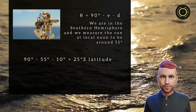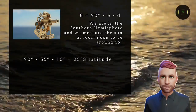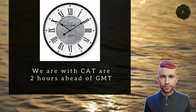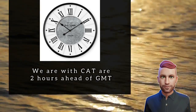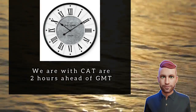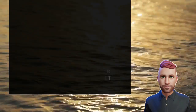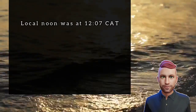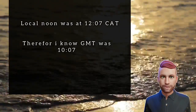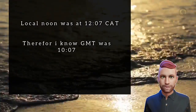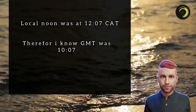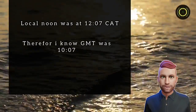Great. Now that we have worked out our latitude, let's go on to work out our longitude. Since I know I work with CAT, which is Central African Time, we are two hours ahead of GMT — Greenwich Meridian Time. Our local noon was 7 minutes past 12, which is two hours in front, so in Greenwich it would be 7 minutes past 10.